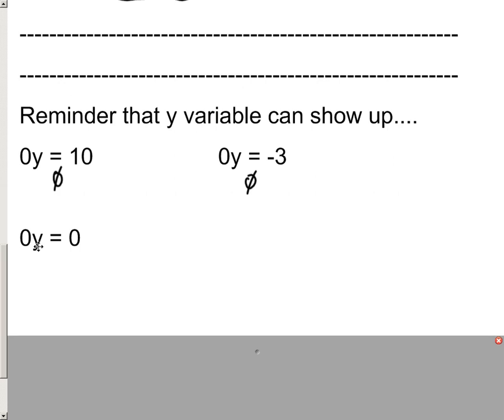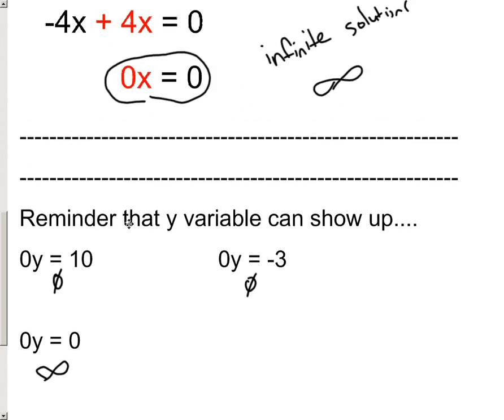But if I looked at this situation down here of 0 times y equals 0, yeah, any number times 0 will get you 0. So I know that this one would be an infinite solution setup. And it's very similar to the 0x equals 0. Same thing for 0y equals 0. That's an infinite.